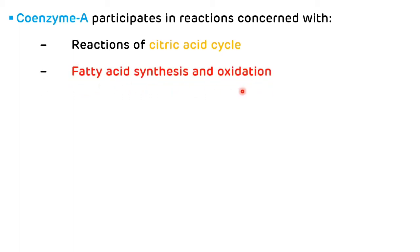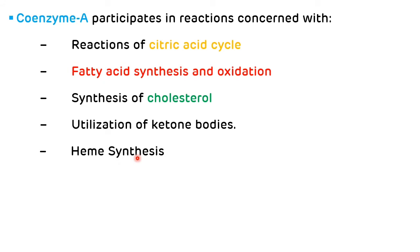Coenzyme A participates in reactions concerned with: reactions of citric acid cycle, where acetyl-CoA combines with oxaloacetate leading to synthesis of citrate plus coenzyme A; reactions of fatty acid synthesis and oxidation; synthesis of cholesterol; utilization of ketone bodies; heme synthesis, where glycine condenses with succinyl-CoA leading to synthesis of delta-aminolevulinic acid; and synthesis of acetylcholine, where acetyl-CoA combines with choline leading to synthesis of acetylcholine plus coenzyme A.